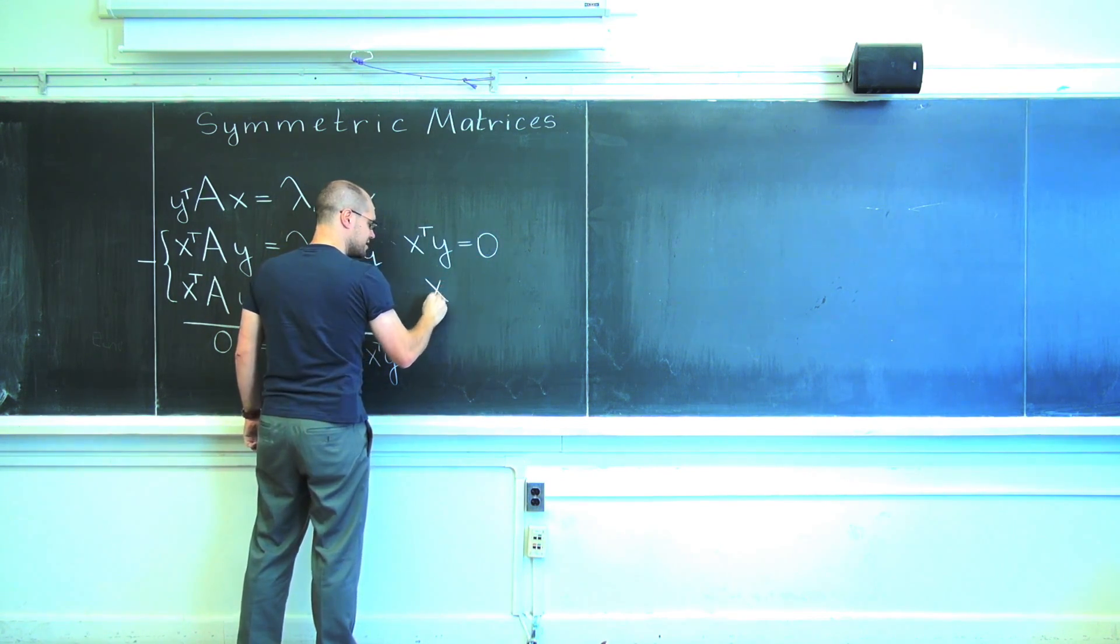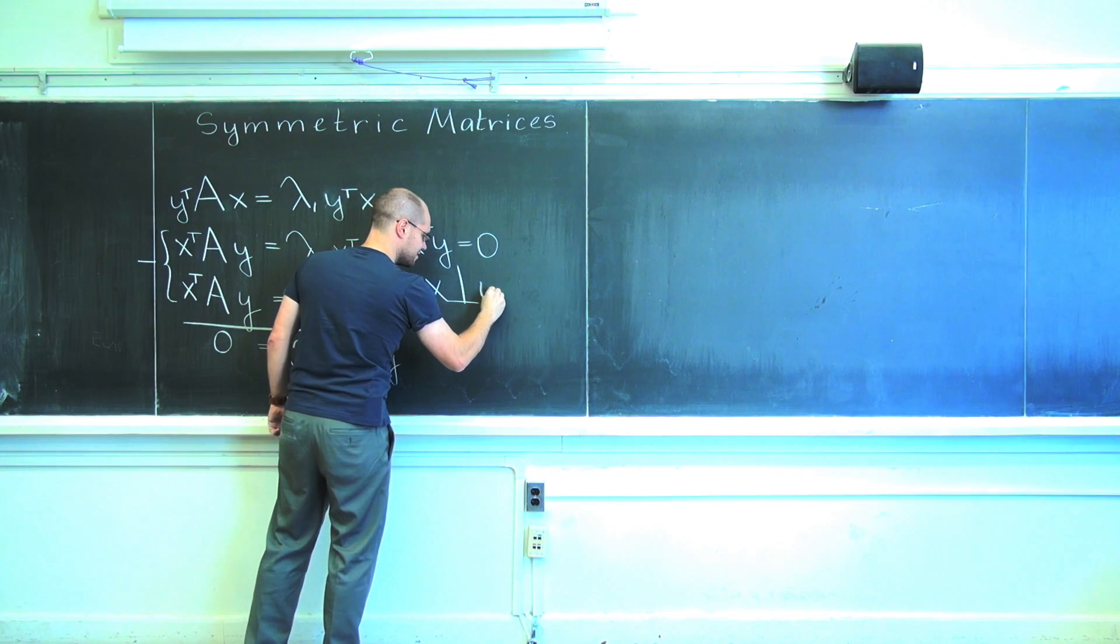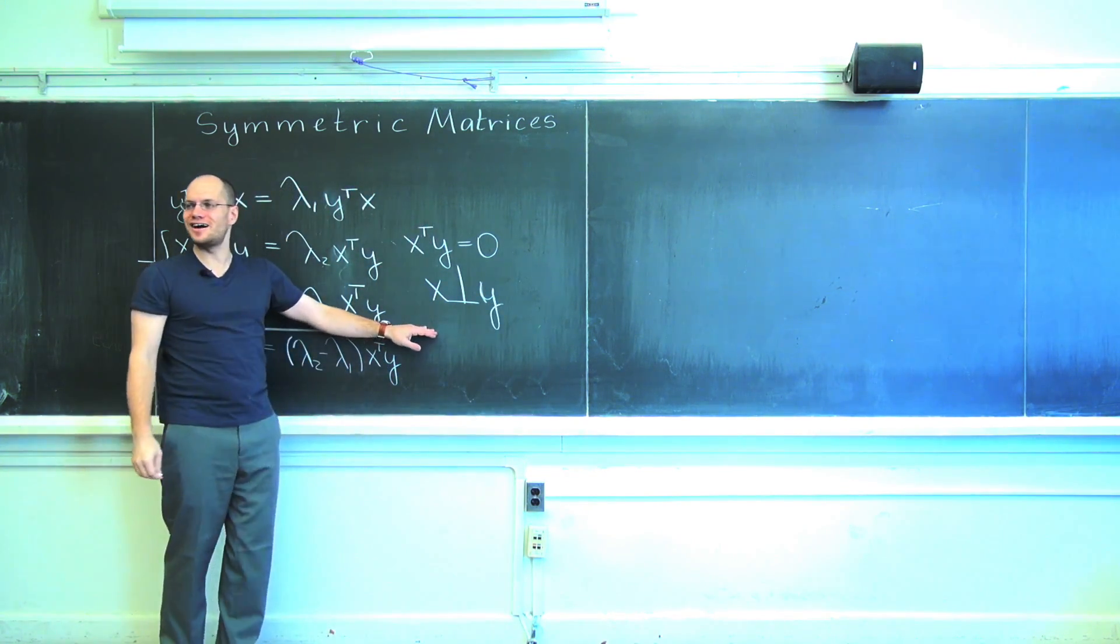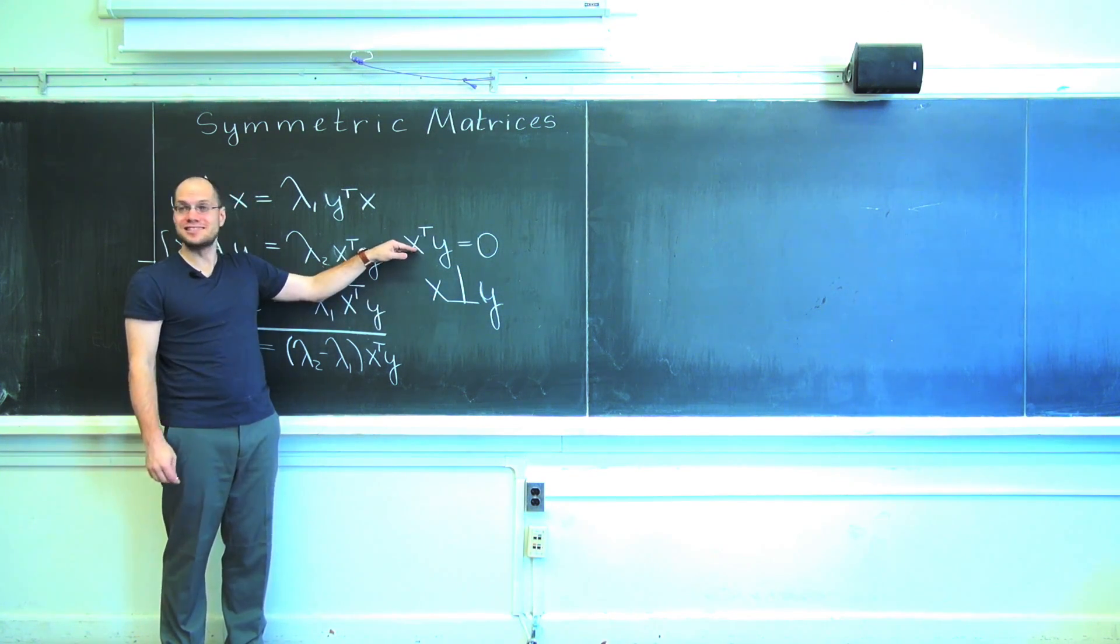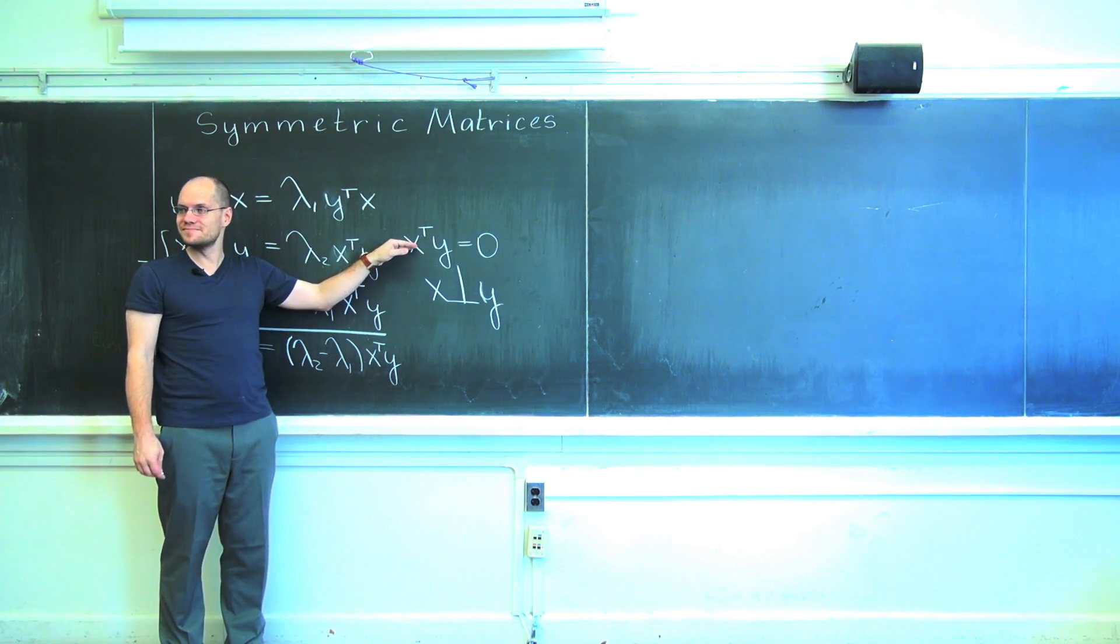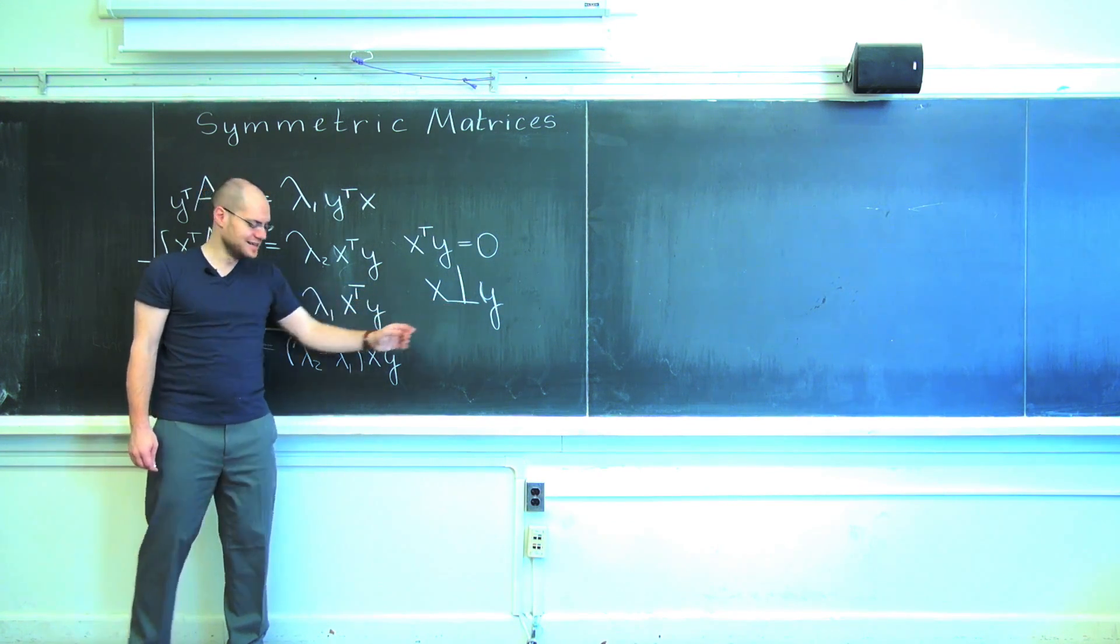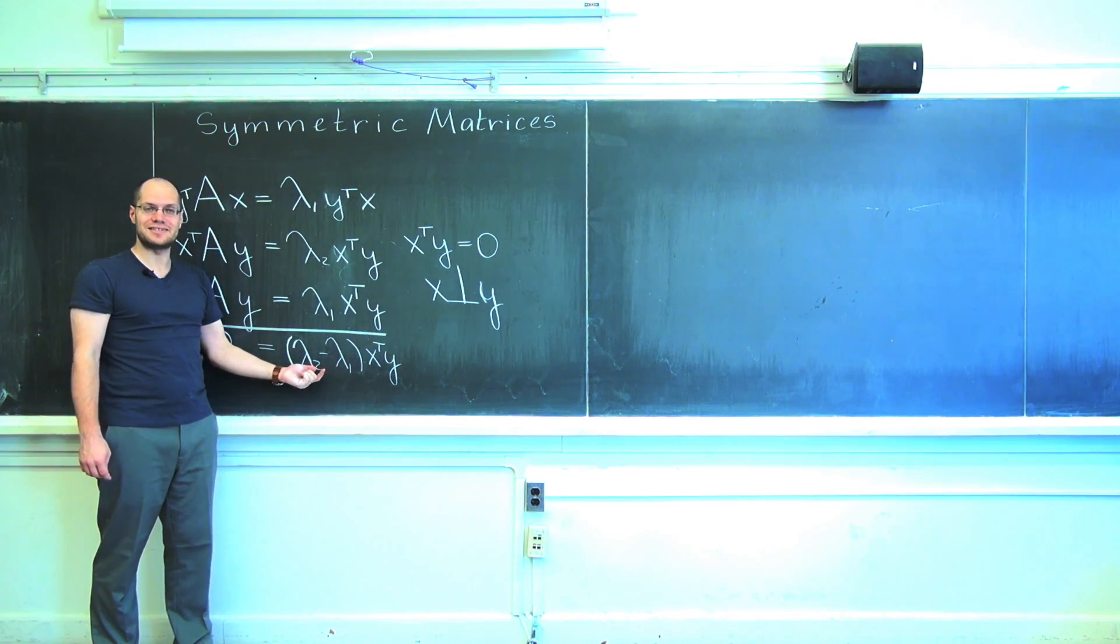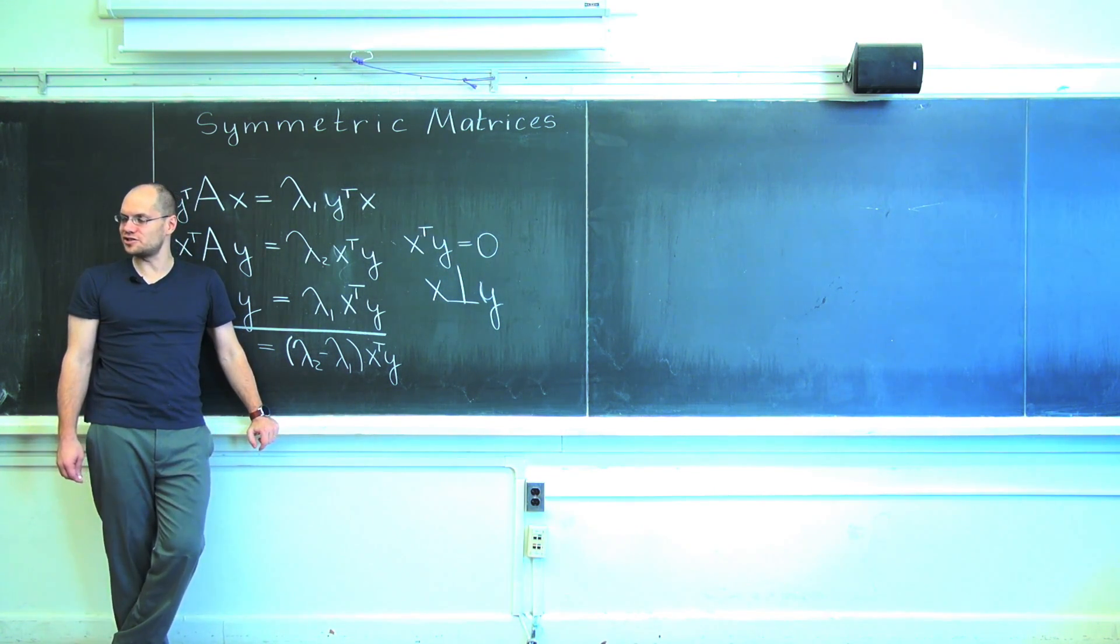In other words, well, not in other words, I'm not even sure why I'm writing it. X is orthogonal to Y in the sense of the standard inner product. I shouldn't have written this because this says the exact same thing. This is just frivolous use of the symbol. So there we go, we've proven that if the eigenvalues are distinct, the corresponding eigenvectors are orthogonal to each other.